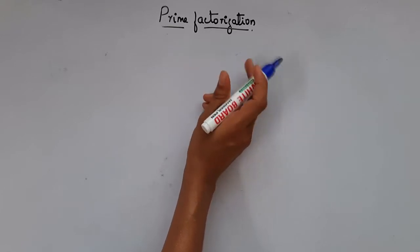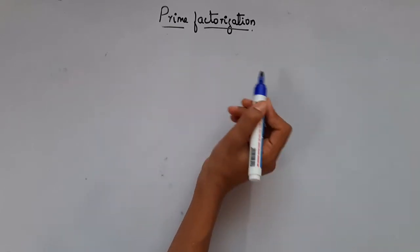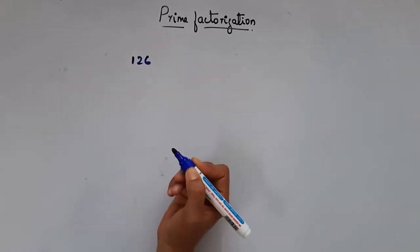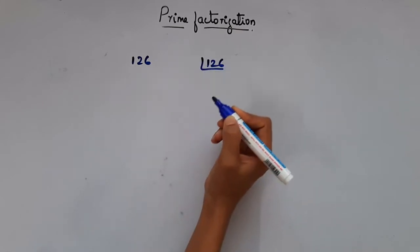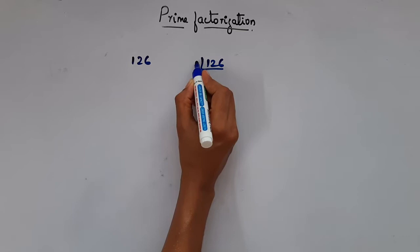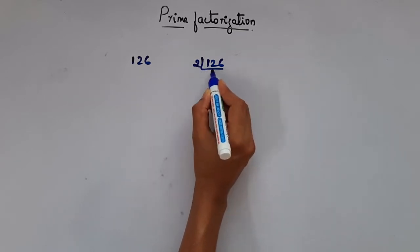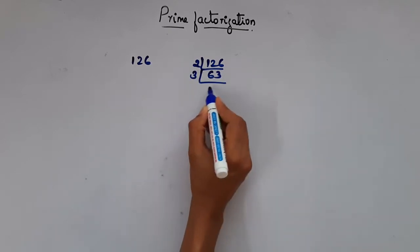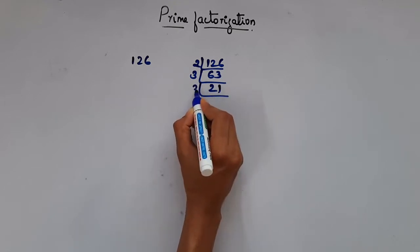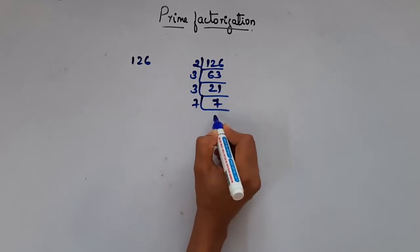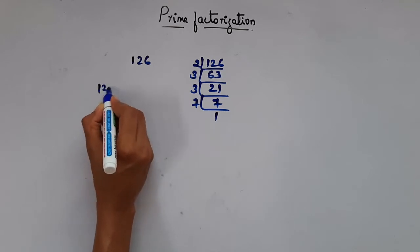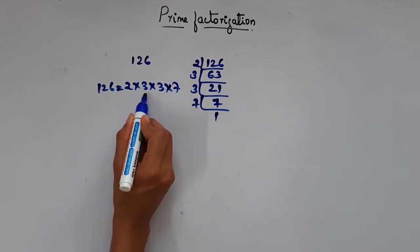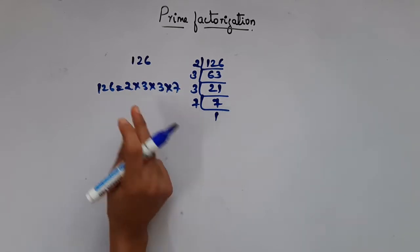What is prime factorization? Writing a number as a product of prime factors is called prime factorization. Let's take an example: 126. Divide 126 by a prime number, starting with the smaller one, that is 2. Continuing the division, 126 can be written as 2 into 3 into 3 into 7 — that is the product of prime factors. So this is prime factorization.